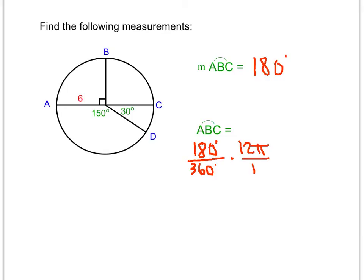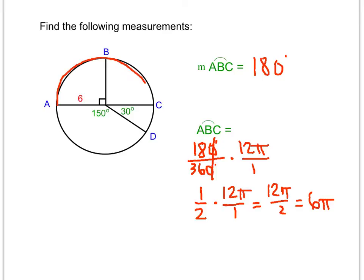Reducing 180 over 360: cancel the zeros to get 18 over 36, which is 1/2. Multiplying 1/2 by 12π gives 12π over 2, which equals 6π. So if you walked from A to C — halfway around the circle — you would be walking 6π units.